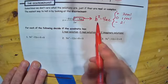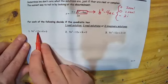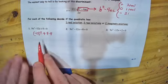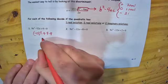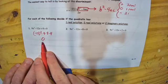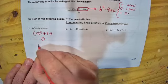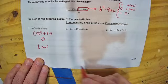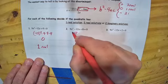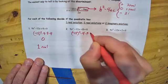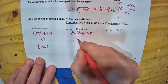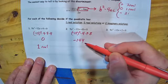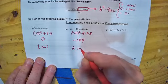We're just going to plug things into the formula b squared minus 4ac. In the first case, b is negative 12, so it's negative 12 squared minus 4 times 9 times 4. If we do this right, we end up getting zero. That gives us just one real solution. For the second problem, it's negative 12 squared minus 4 times 9 times 8 — the only thing that changes is the 8. If we simplify, we get negative 144. Taking the square root of a negative number gives us two imaginary solutions.